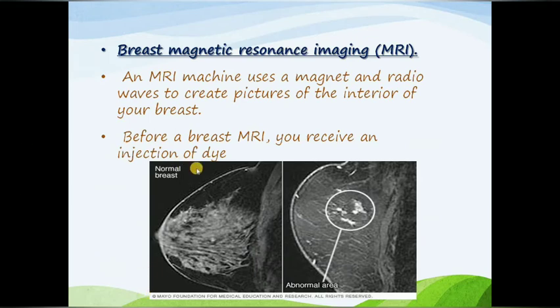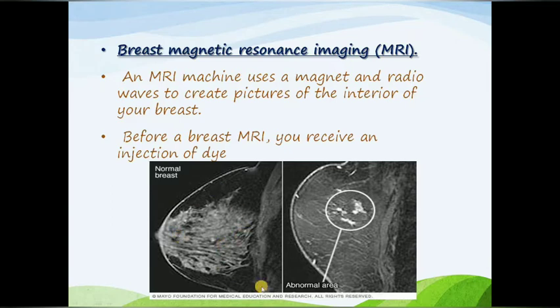The MRI — an MRI machine uses a magnet and radio waves to create a picture of the interior of your breast. Before a breast MRI, you receive an injection of dye. This is the picture of the normal breast, and this is the abnormal area visible on the MRI.